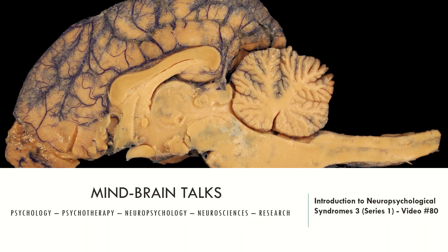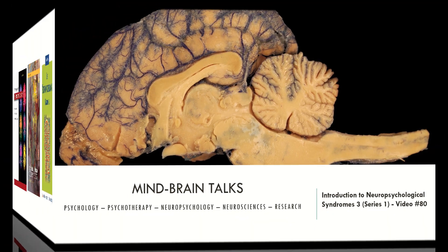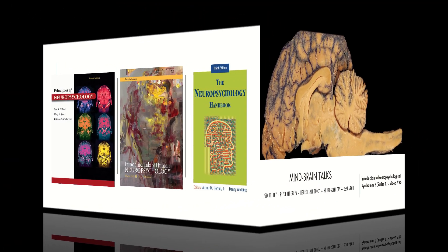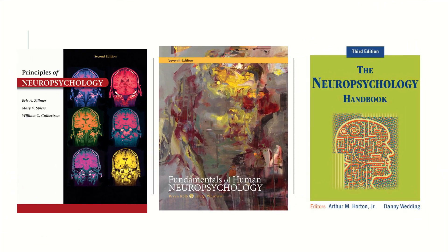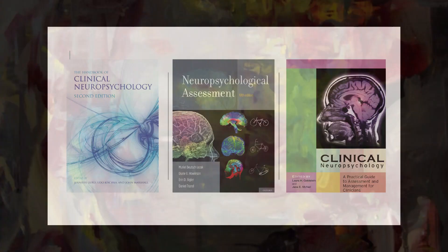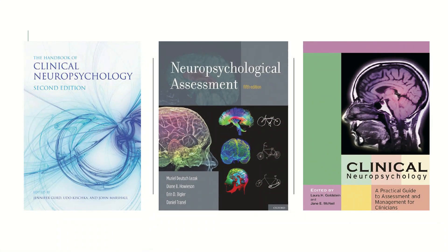The first is the Principles of Neuropsychology, the second is the Fundamentals of Human Neuropsychology, the third is the Neuropsychology Handbook, the fourth is the Handbook of Clinical Neuropsychology, the fifth is the Neuropsychological Assessment, and the sixth is the Clinical Neuropsychology.